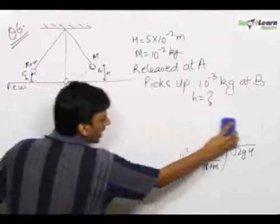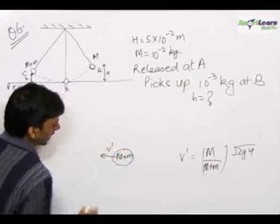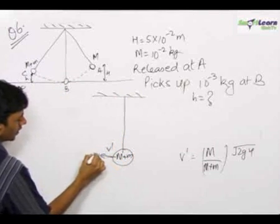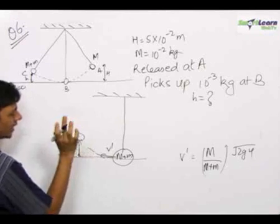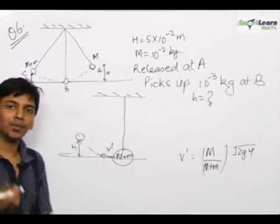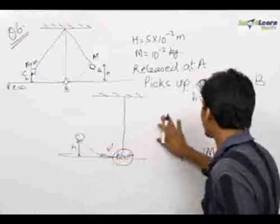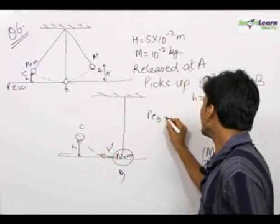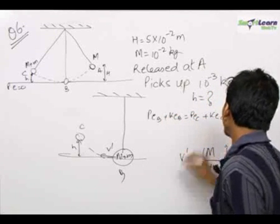We know the combined mass of the system at the lowermost point with velocity v dash. Now again let us analyze the pendular motion. The combined mass will rise up until its kinetic energy becomes 0. Again from this point B to point C, we can apply mechanical energy conservation. Potential energy at B plus kinetic energy at B equals potential energy at C plus kinetic energy at C.